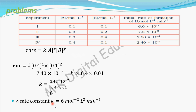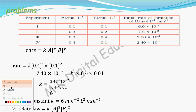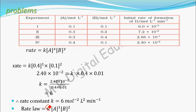Now that we have found K, X, and Y, we can write the rate law. Rate law = 6 × [A]¹ × [B]². That is the complete rate law for this reaction. Thank you.